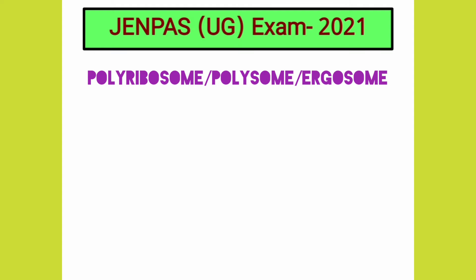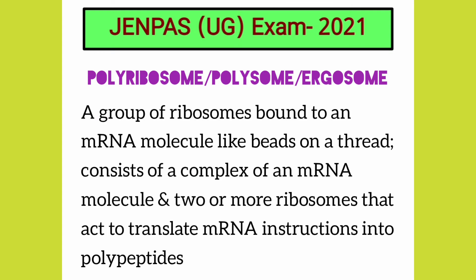What is a polyribosome? A polyribosome, or polysome, is a group of ribosomes bound to an mRNA molecule like beads on a thread. It consists of a complex of an mRNA molecule and two or more ribosomes that act to translate mRNA instructions into polypeptides.